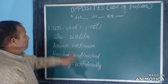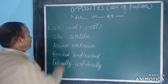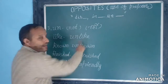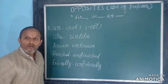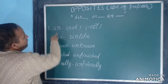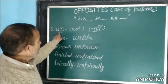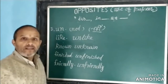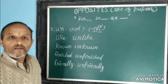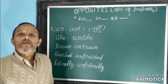Third prefix is UN. When we use UN as a prefix before any word, it also means 'not' (नहीं) and changes the meaning of that word. Like (पसंद/to like) → Unlike (नापसंद/unlike, to dislike). Known (जानना/to know) → Unknown (जाने बिना/unknown). Finished (खत्म) → Unfinished (अधूरा/incomplete, not finished). Number 4: Friendly (मित्रवत) → Unfriendly (मित्रवत नहीं/not friendly).